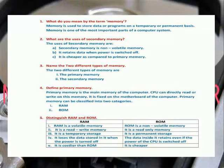One is RAM. Two is ROM. Distinguish RAM and ROM. RAM is a volatile memory. It is read-write memory. It is a temporary storage. The data stored when the power is turned off is lost. It is costlier than ROM.